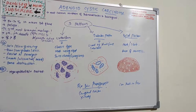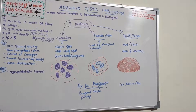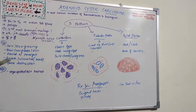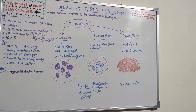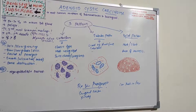There is no significant gender predilection, though a slight female predilection has been reported. Clinically, pain is a common and important finding. It presents as a slow-growing mass with constant low-grade dull ache that gradually increases in intensity. Facial nerve paralysis may develop with parotid tumors. Palatal tumors can have a smooth or ulcerated surface. Tumors arising in the palate or maxillary sinus may show radiographic evidence of bone destruction.